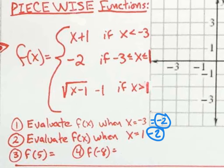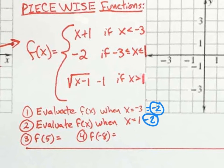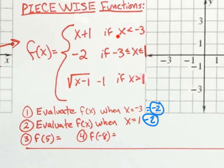Number three is the same as numbers one and two, just in function notation. This is read f of five, which means you're going to plug five into your f of x function and simplify. Is five less than negative three? Definitely not. Is five between negative three and one on the number line? No. Is five greater than one? Yes — so you're going to plug five into the square root piece.